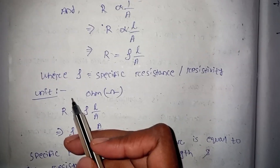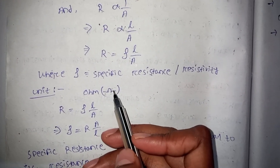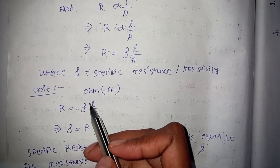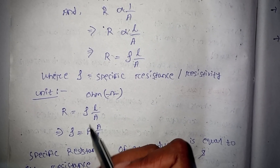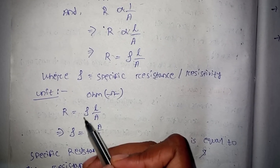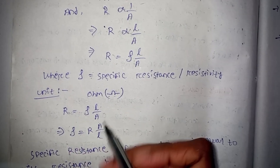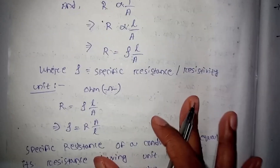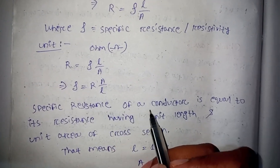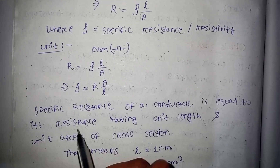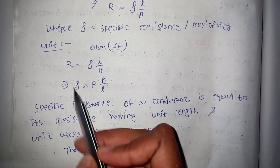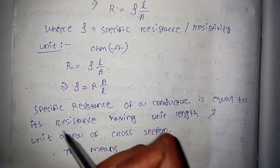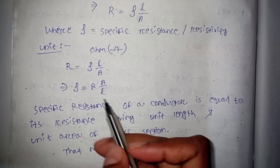Resistance and resistivity: the unit of resistance is the Ohm and the symbol is R. Resistivity (specific resistance) is given by R = ρ × l / A, where ρ is the specific resistance. The specific resistance of a conductor is equal to its resistance when it has unit length and unit area of cross-section.